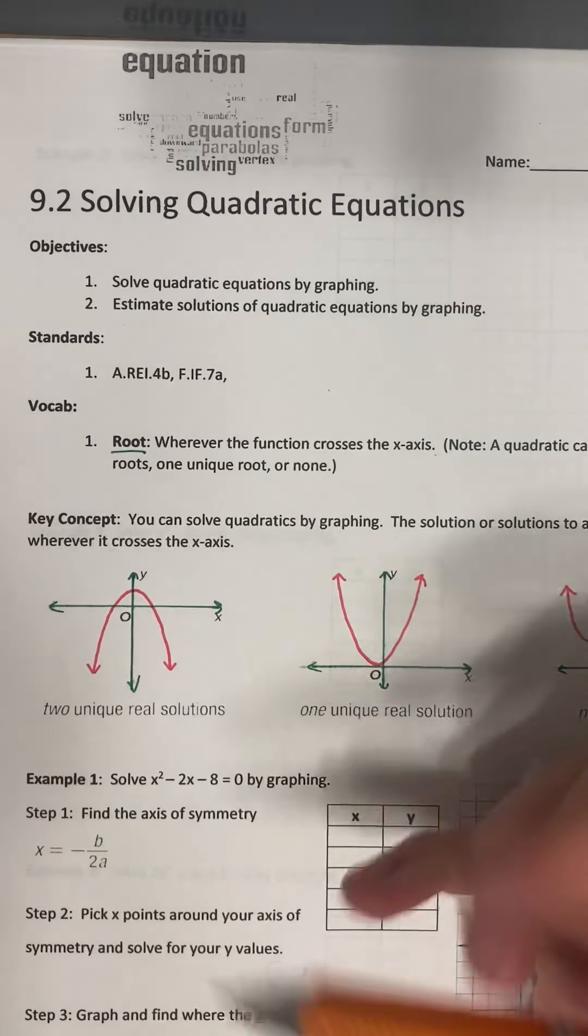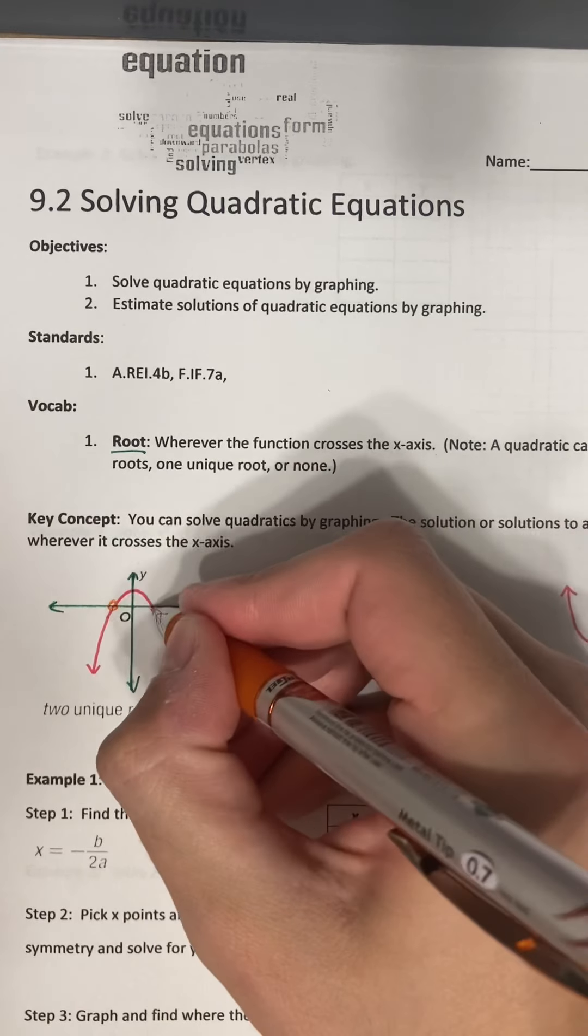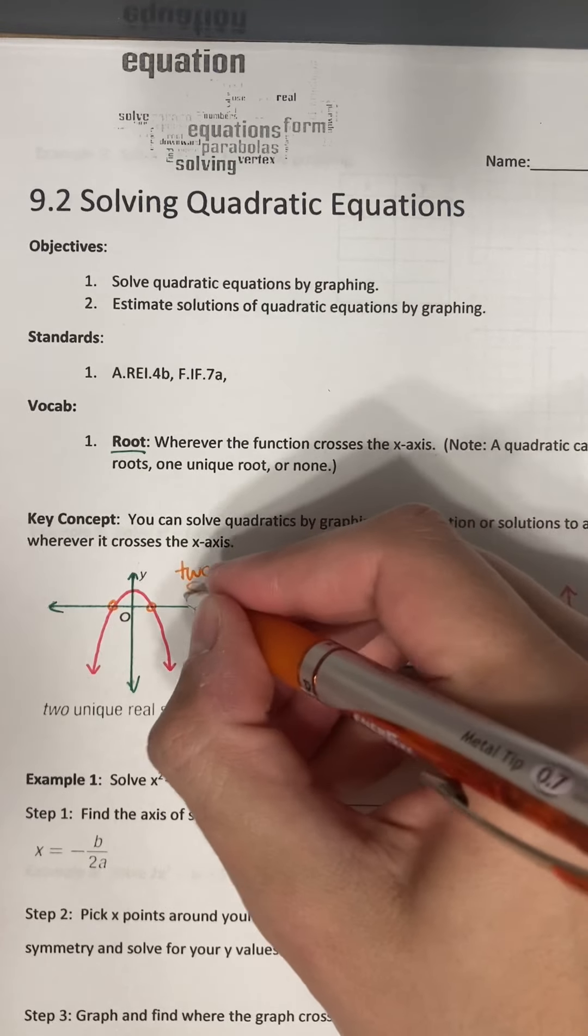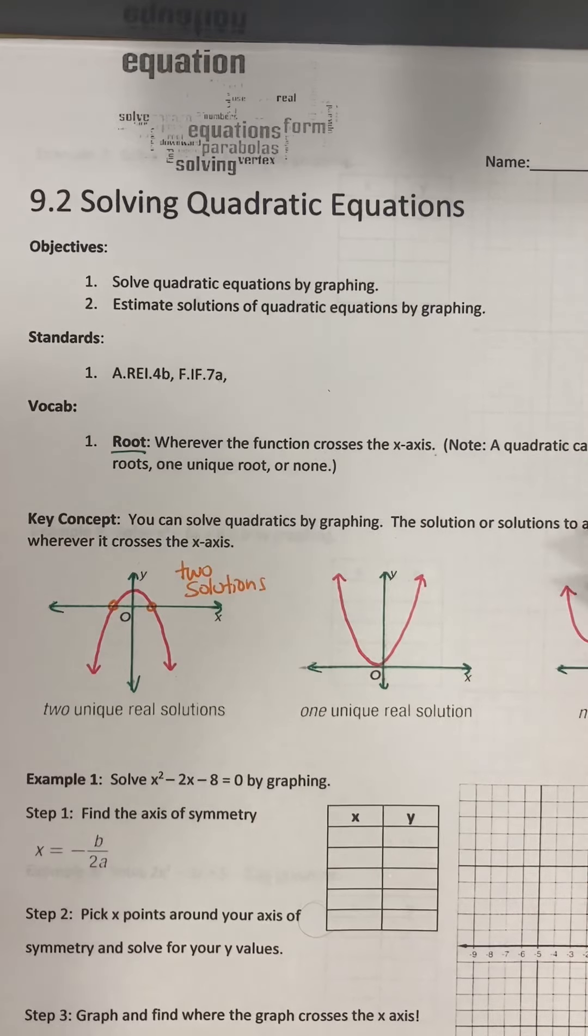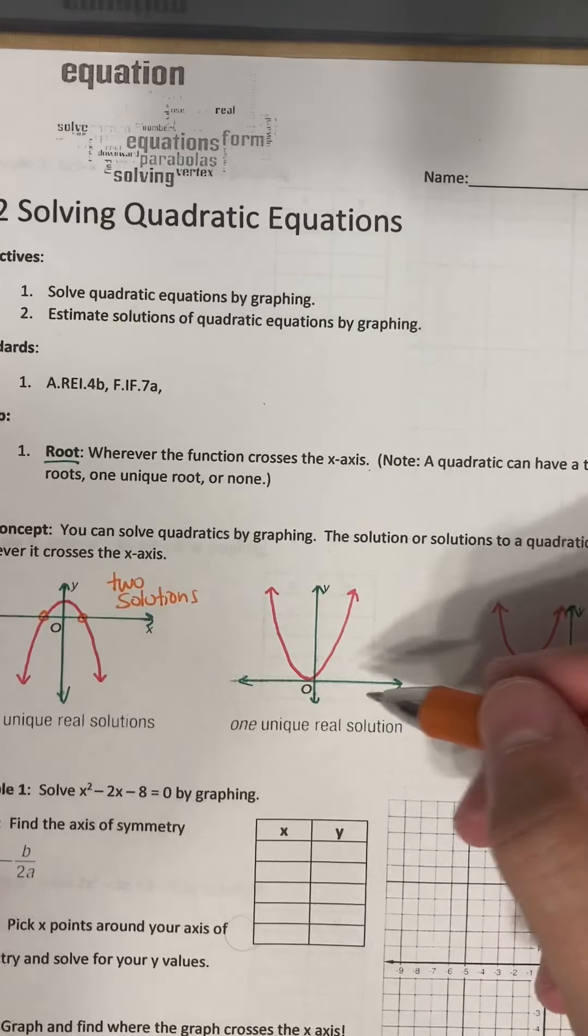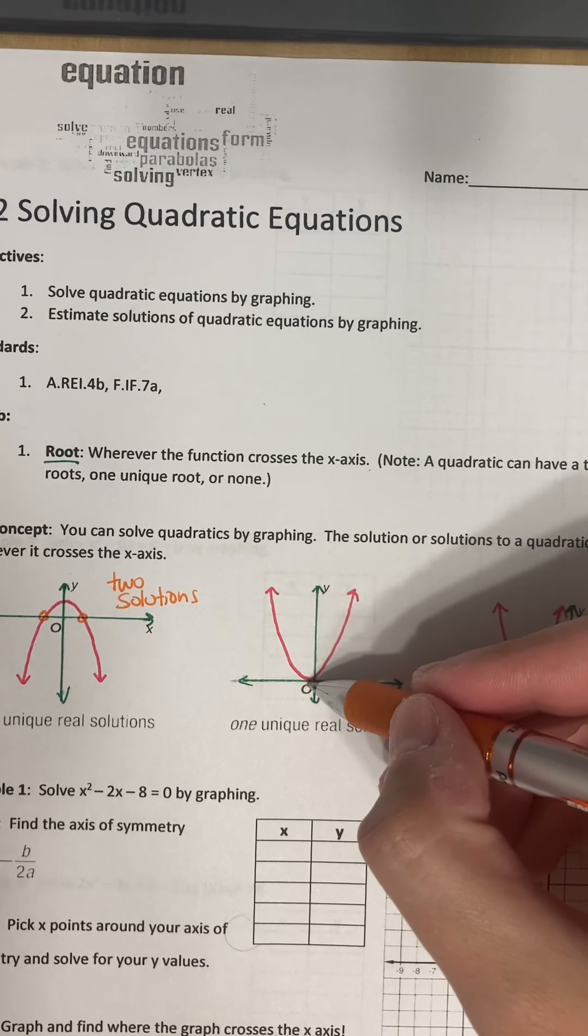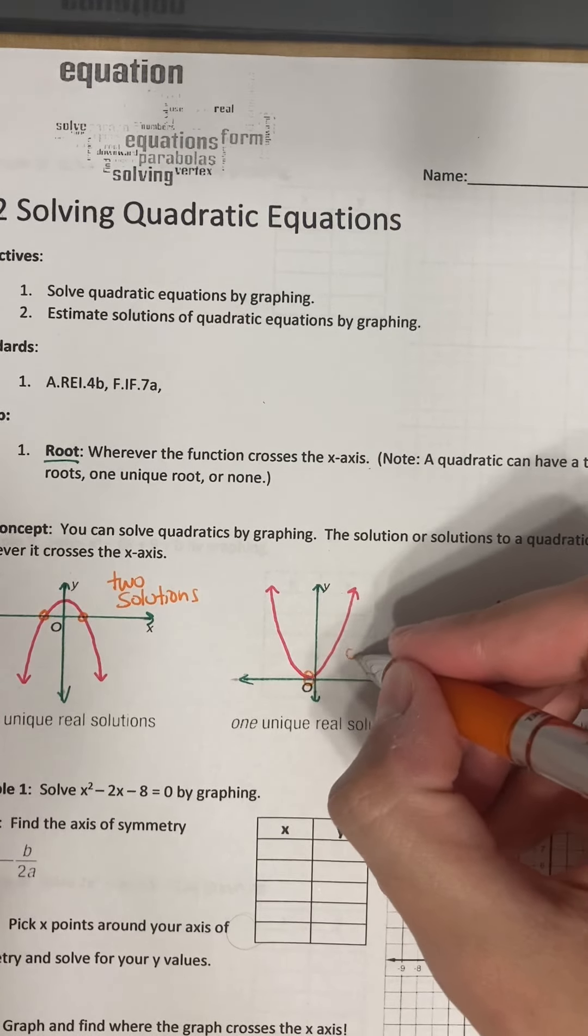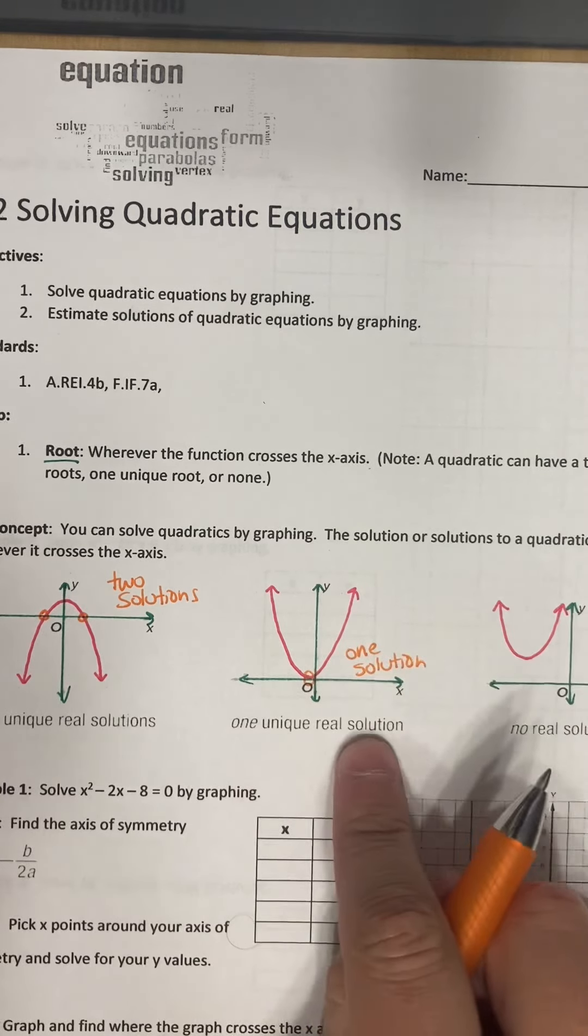So for this first one, we have two unique real solutions. There is a solution here and a solution here. So there are two solutions with a lot of parabolas and quadratics. But if you look in this case, the quadratic comes down and it just barely touches the x-axis and starts going back up. In this case, we only have one solution or one unique real solution.